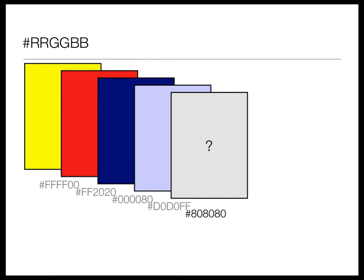What about 808080? All three values are the same, so it's a shade of gray. 80 is pretty much bang in the middle, so it's a middling shade of gray.